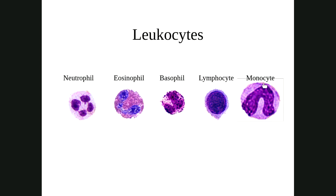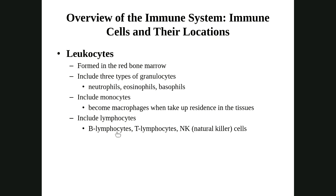Monocytes are our big eaters — the macrophages. These guys act like policemen and janitors. They clean up cellular debris after something is destroyed in our body, but they also go after pathogens, engulfing and destroying them. Lymphocytes — the two main ones, T cells and B cells — provide us with what we call specific defenses, our ability to defend against very specific problems. We will talk more about that later in the chapter.